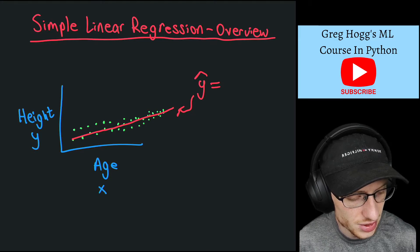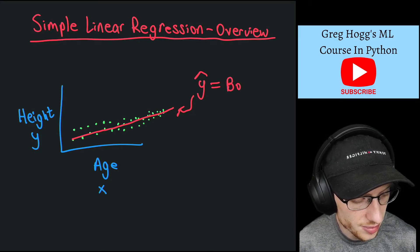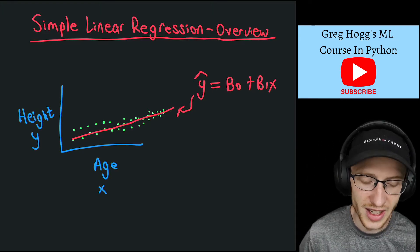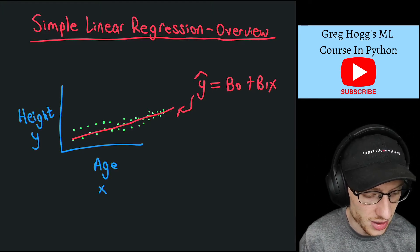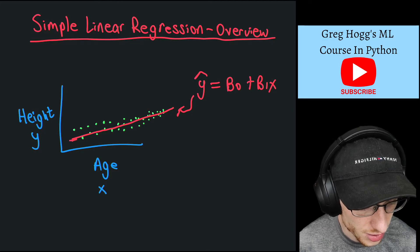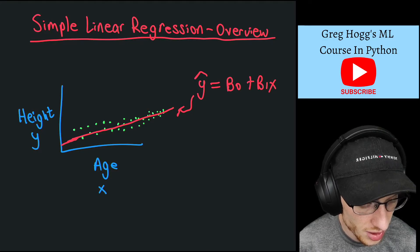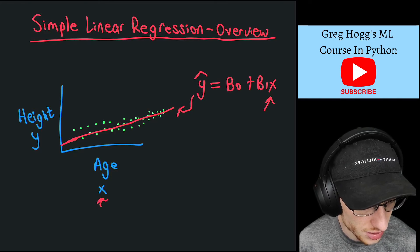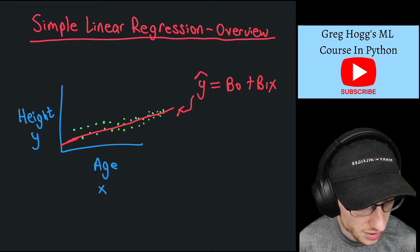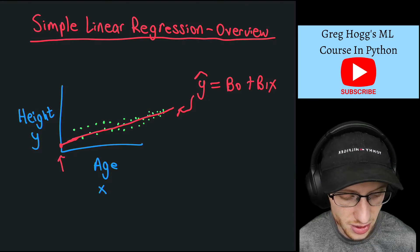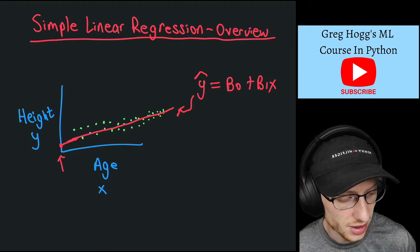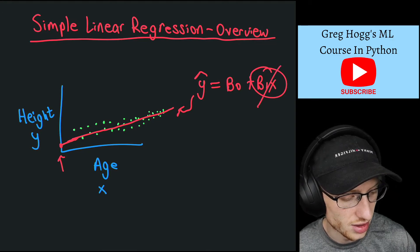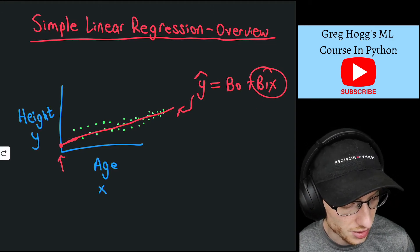So y hat is actually equal to beta naught plus beta 1 x. And that is because beta naught is this value here, where if I extend this line over, then if you set x to zero, so if you set this x to be zero, then you get this thing. Okay, x is zero, you get that. That is what beta naught is. And so remember, you can picture this basically getting crossed off because that's zero, and you get beta naught.